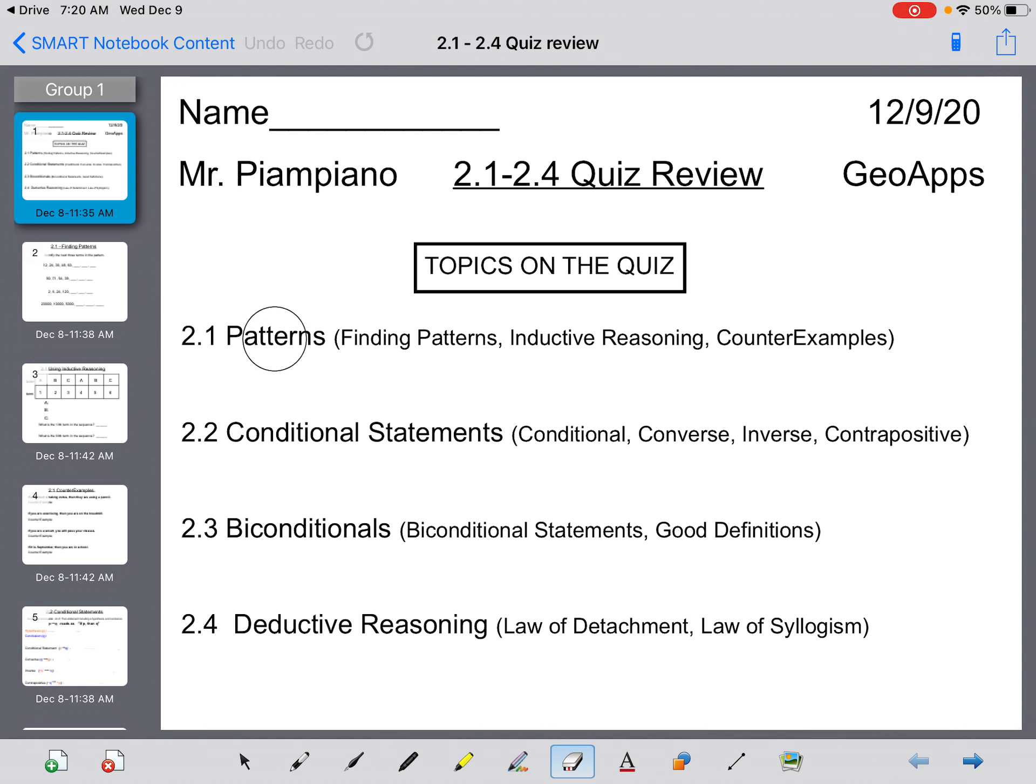Lesson 2.1 was on patterns, finding patterns, inductive reasoning, and counterexamples. 2.2 is on your conditional statements, writing your conditional given the hypothesis and conclusion, writing the converse, inverse, and contrapositive. 2.3 was on your biconditional statements and what is a good definition. And then 2.4 is deductive reasoning, your law of detachment and law of syllogism from yesterday's lesson.